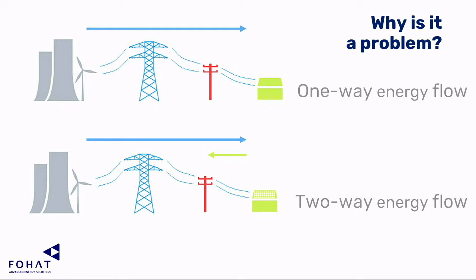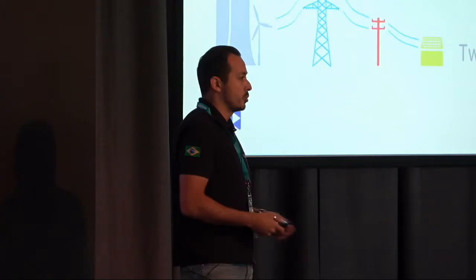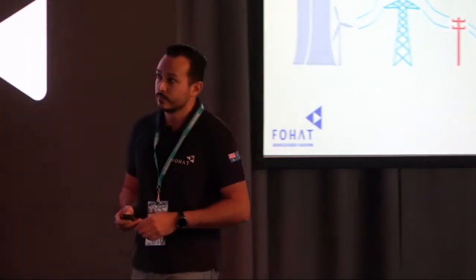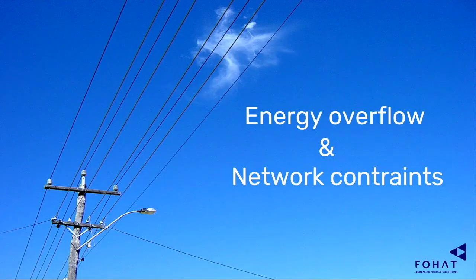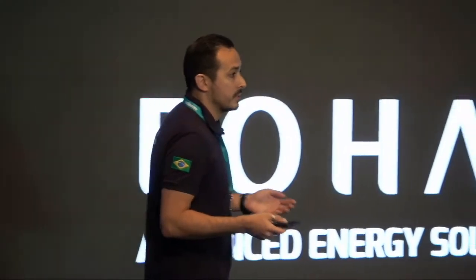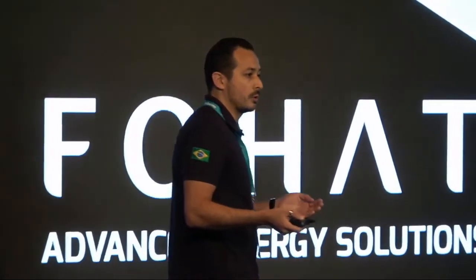Every time someone installs a solar system at home, all the excess energy generated is injected back into the grid. Two million houses are doing this today, and the consequence is that we see an energy overflow into the poles and wires. The distribution network providers then try to put network constraints — in places where the concentration of solar systems is too high, you are not allowed to install a solar system anymore.